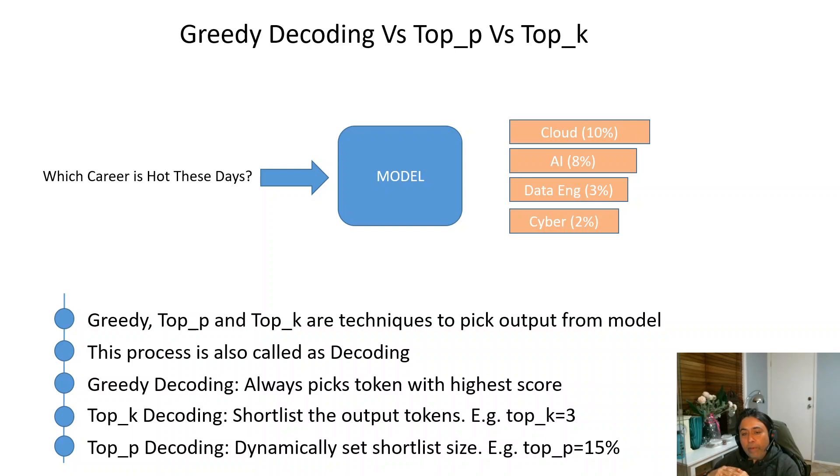The way we do it, we just give it as a percentage. So in our example, we have given top_p equals 15%. So what the model will do is go into the shortlist of output tokens, and then from there it will calculate or add up the tokens which won't exceed 15%.